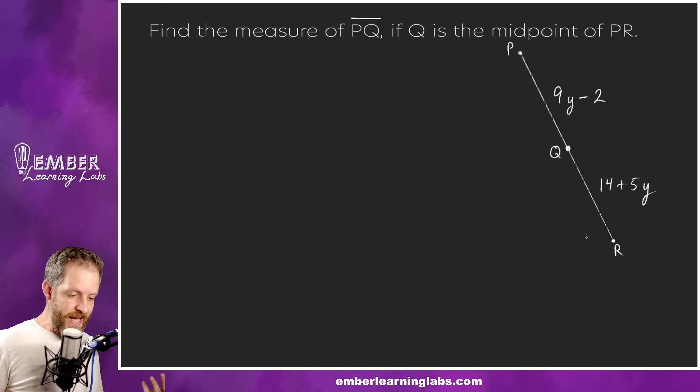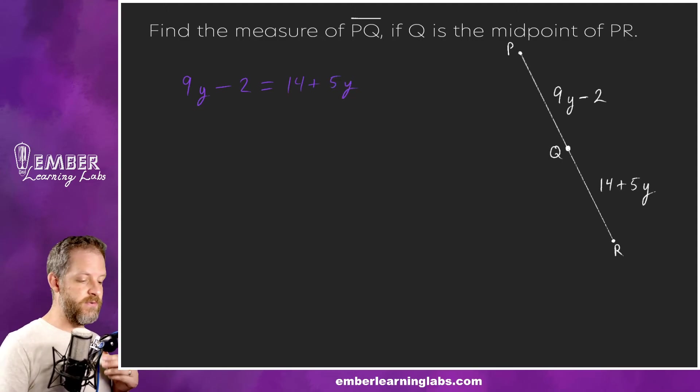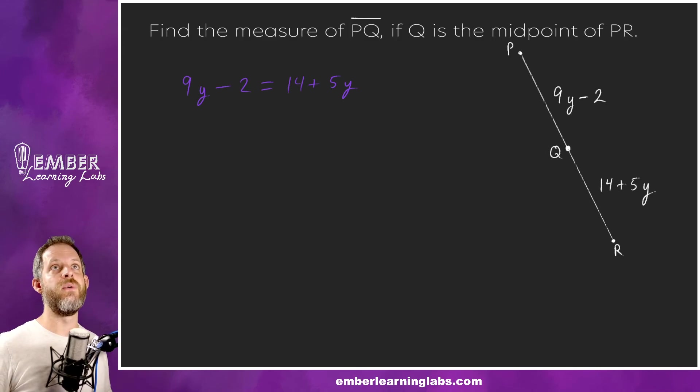I don't know, I'd have to remember what the name is. But what it says is it's got to be a postulate, it's kind of a no-duh, because if Q is the midpoint then PQ and QR are congruent, which means their measures are equal, which means we can take this and set it equal to that, solve for y and be done with that part. So let's do it. So here we go, we're going to say that 9y minus 2 equals 14 plus 5y.